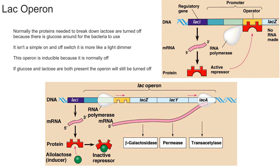One last thing to mention is that the lac operon isn't a simple on and off switch — it's more like a light dimmer. What I mean by that is if you have a ton of lactose, you can turn it on a lot, creating a lot of the proteins that break down lactose. But if you only have a little bit of lactose, you're probably not going to create that many proteins, because it would essentially be a waste of energy.